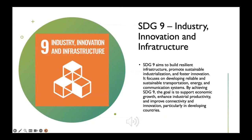SDG 9: Industry, Innovation, and Infrastructure focuses on building resilient infrastructure, promoting sustainable industrialization, and fostering innovation. The goal recognizes that robust infrastructure, inclusive industrialization, and technological advancement are vital for sustainable development. SDG 9 targets the development and upgrading of infrastructure including transportation, energy, and information and communication technology. It aims to enhance connectivity, accessibility, and reliability of infrastructure systems, particularly in developing countries. The goal promotes sustainable industrialization and expansion of manufacturing sectors with a focus on job creation, economic diversification, and environmental sustainability, and encourages the adoption of cleaner and more efficient technologies and practices.